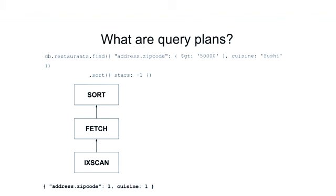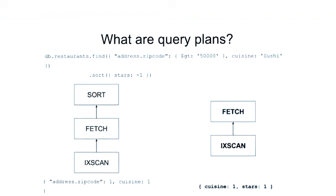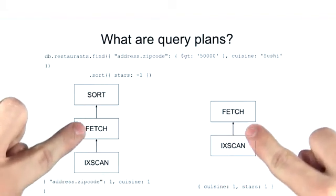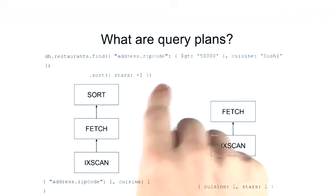But for a given query, we can have many different query plans based on what indexes are available. So if we had an index like this on cuisine and stars, this could prevent an in-memory sort. So we'd have a query plan like this. Here we do an index scan where we fetch the record IDs of our documents in sort order. We then pass this up to the fetch stage, where they're converted into documents and then returned. So the available indexes will determine what possible query plans we can use to satisfy our query.